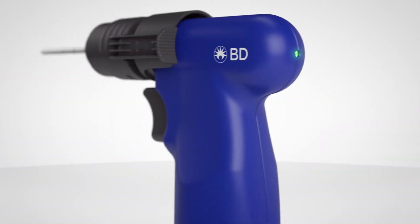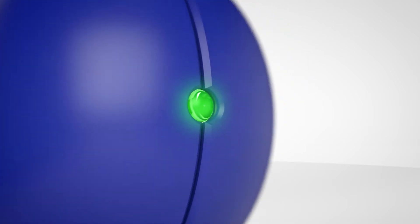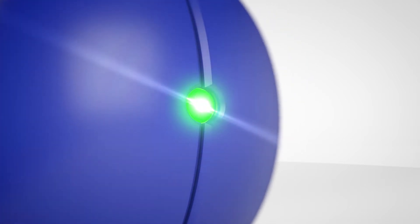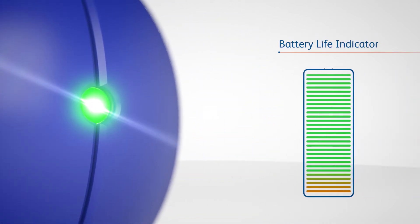An LED indicator displays driver speed and battery level. The LED brightness indicates the relative speed of the power driver. Full brightness indicates that the driver is operating at maximum speed.